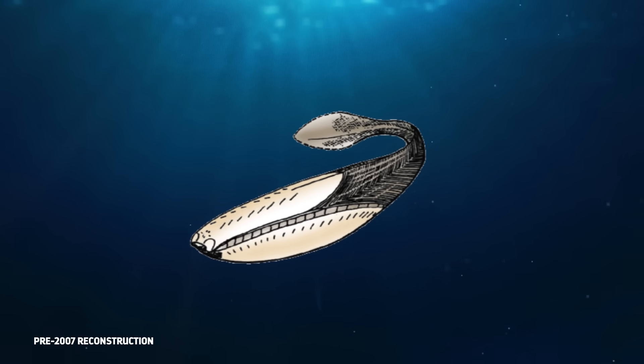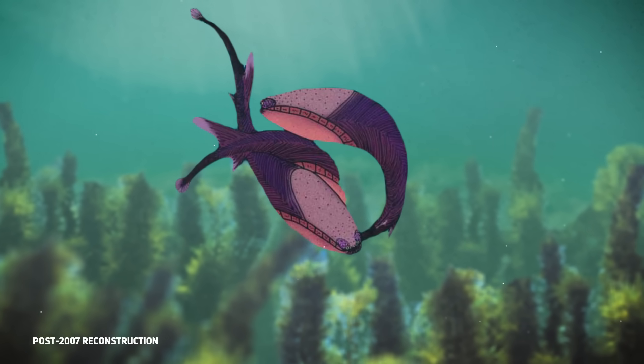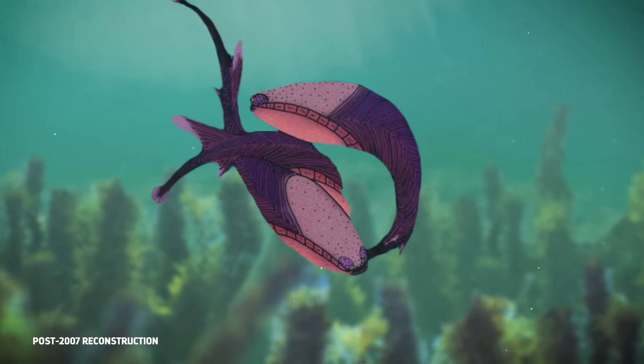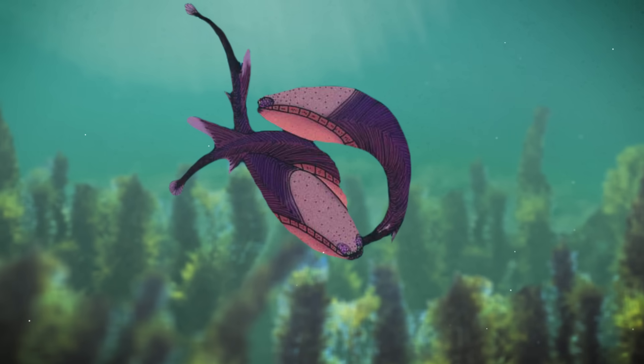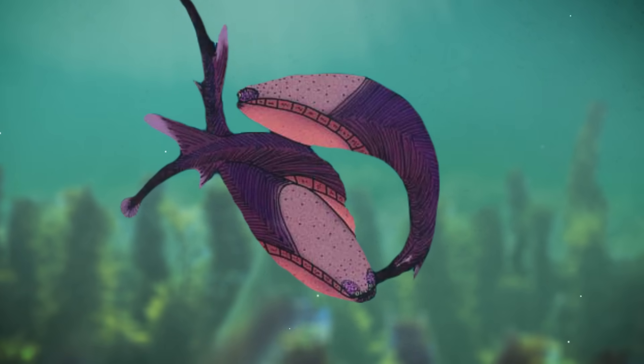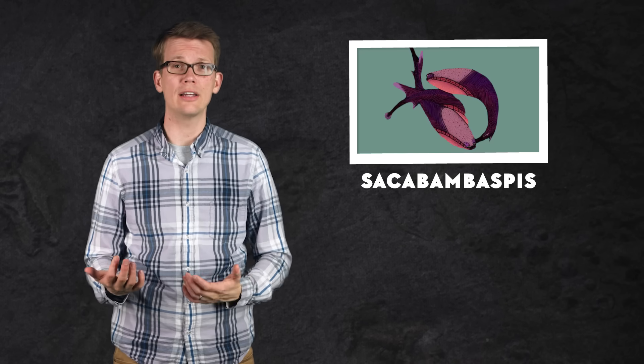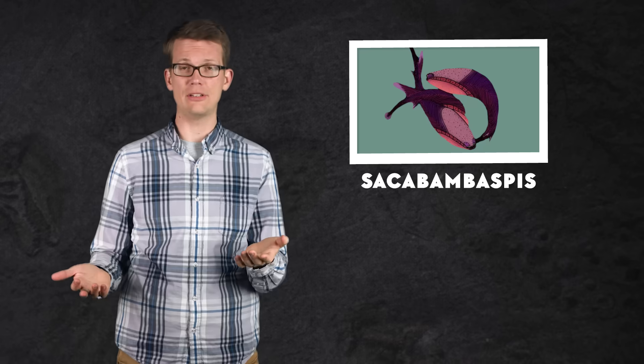But what it lacked in fishiness in the front of its body, it made up for with an extravagant tail, complete with a shark-like fin and a long scaled rod extending from the tip. And the most distinctive feature of this fish was, of course, its armor, a new adaptation probably made of a primitive bone-like tissue called aspidin, as well as dentine and enameloid, materials that are very similar to the ones that make up your teeth. This armor covered the head in big plates with smaller joined chevrons running along the rest of its body. So Sacabambaspis was the first fish that we know of to acquire this kind of covering, but it would soon have many imitators.